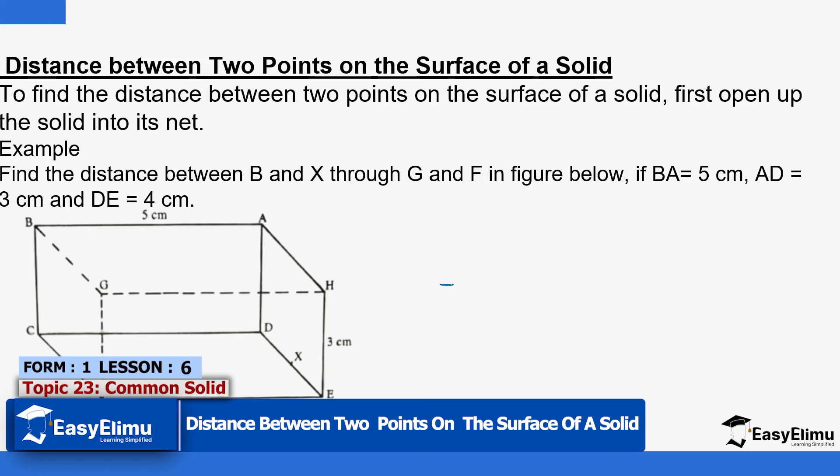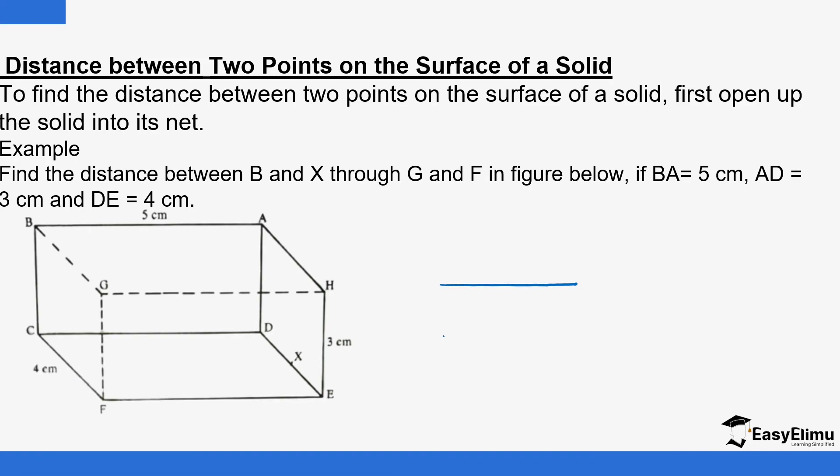So let me just draw a representation of the net. And we already talked about the procedure that is followed when you're drawing the net. So I want you to draw a small diagram here that looks like the net. So this is the base. So we have F, E, D, and C. Then you have the other side.